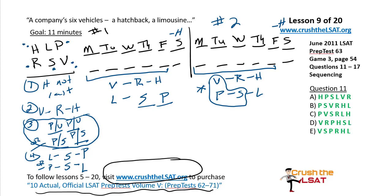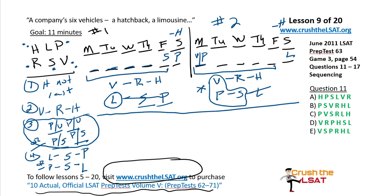In scenario one, H can't be Saturday — so who must be? P must be on Saturday. And S must be right next to P on Friday. That's a helpful early deduction. L becomes a floater between Monday and Thursday. V can be Monday or Tuesday, R can be Tuesday or Wednesday, H can be Wednesday or Thursday. In scenario two, L must go on Saturday — cross L off the floater list. Monday must be V or P. This is our master sketch, underlined, and we won't tamper with it.